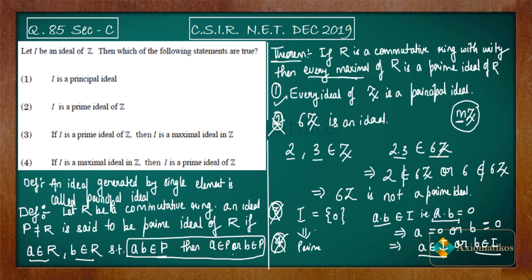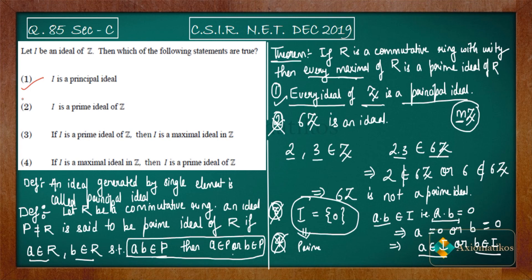To summarize: you need to check the definition of maximal ideal and verify why I = {0} is not a maximal ideal in Z. You can also prove that every ideal of Z is a principal ideal for your own knowledge. So the conclusions are: first is correct, second is incorrect, third is incorrect, and fourth is correct.